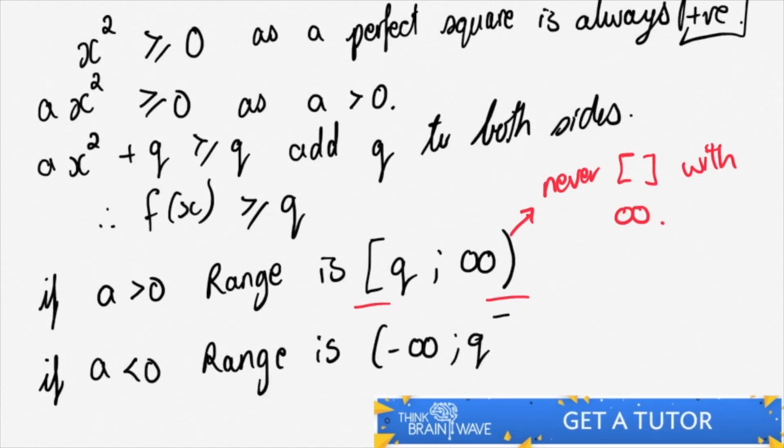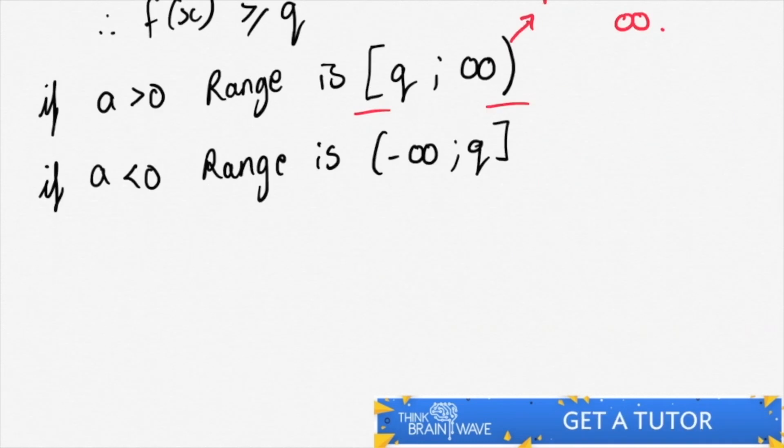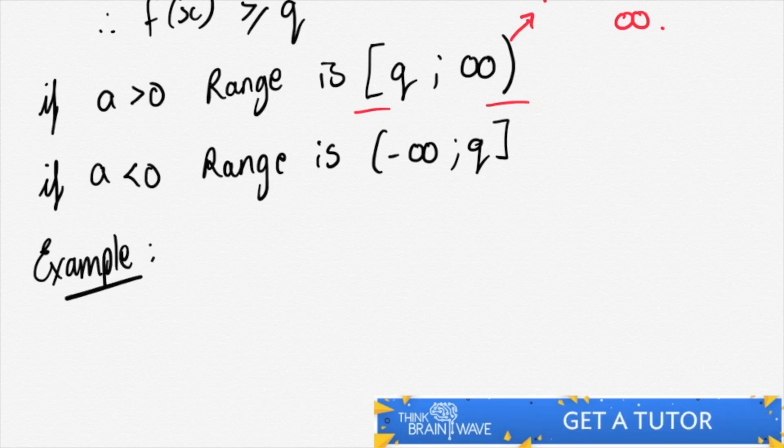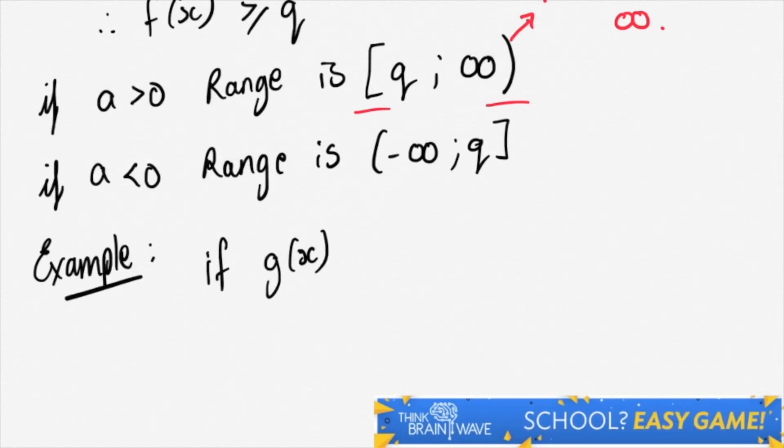Now, if a is less than 0, then the range is negative infinity tending to q. You can use the square brackets for q, but no square brackets for negative infinity.